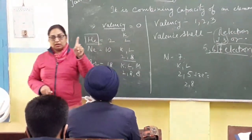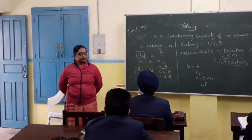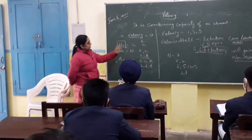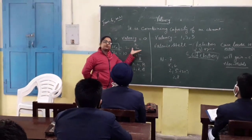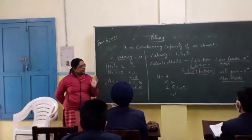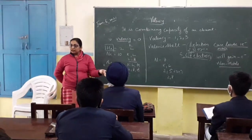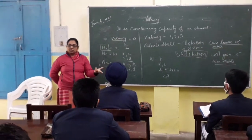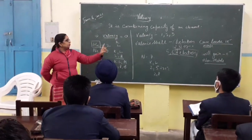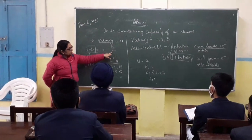In the first shell, K, according to your previous knowledge, how many maximum electrons would be accommodated in this shell? The maximum electrons are two. It means this shell could accommodate a maximum of two electrons, so it is fully filled. The elements which have a fully filled configuration, or whose valence shell is fully filled, have zero valency, because they don't require any electron. That's why they will not combine with anybody. This is the only element whose duplet is complete and valency is zero.